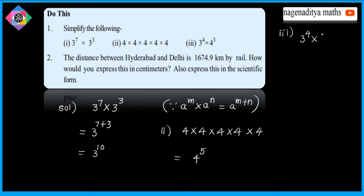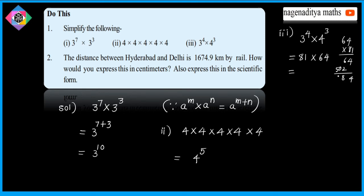Third one: 3 power 4 into 4 power 3. Since the bases are different, we find the values directly. 3 power 4 is 81 and 4 power 3 is 64. Multiplying: 81 into 64 equals 5184.